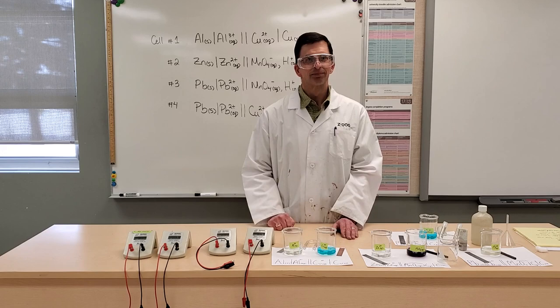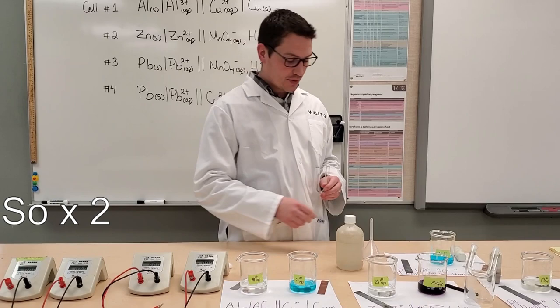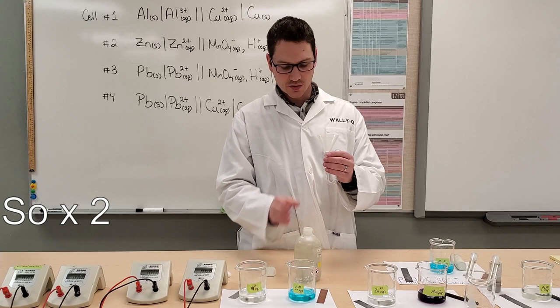Howdy, it's Wally G here. So we're going to construct our first cell, and the first cell is going to use a salt bridge. So this salt bridge, or the U-tube, is going to contain some sodium nitrate. And the way we do that is we're just going to take our U-tube, we're going to add some sodium nitrate.